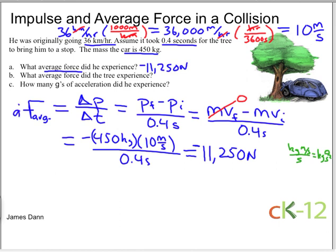If this is part A and part B, all we have to do is use Newton's third law. For every force there's an equal but opposite reaction force. If the tree imparted a force of 11,250 newtons in this direction, then the car must have imparted the same force on the tree in the opposite direction.